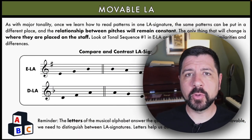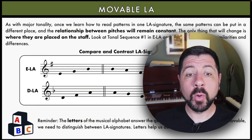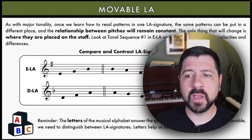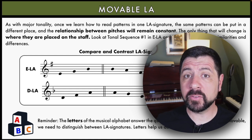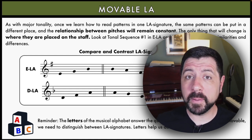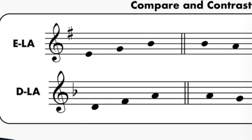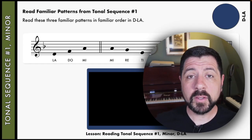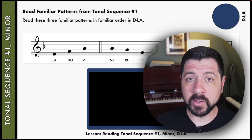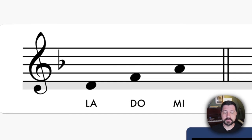Just like we did with major tonality, once we learn how to read patterns in one La signature, we're going to read the same patterns in a different La signature. Remember, the relationship between the pitches will always remain constant. Let's read these same familiar patterns in a new La signature, D La. Mi, Fa, Mi, Re, Do, T, C, La.